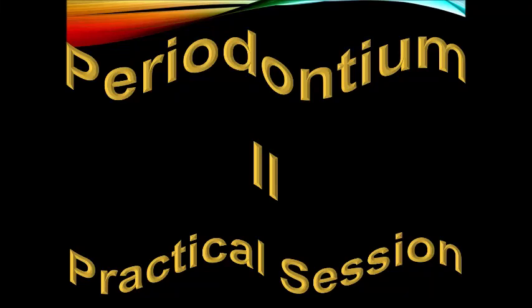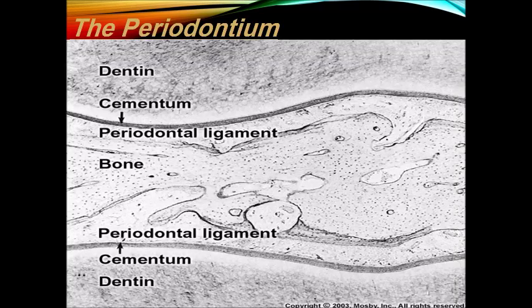Good morning students. Today we will continue talking about periodontium part 2. As we said earlier, the periodontium includes cementum, periodontal ligament, alveolar bone, and the gingiva.